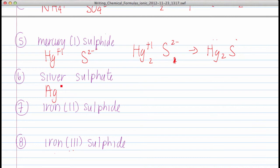Silver sulfate. Silver is plus 1, S O 4 2 minus. A G plus 1, S O 4 2 minus. Criss-cross would give me A G 2 S O 4.